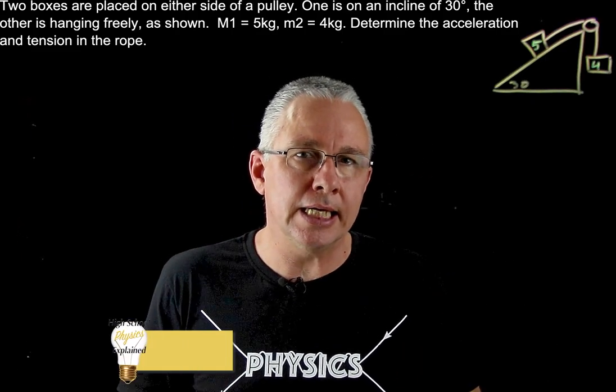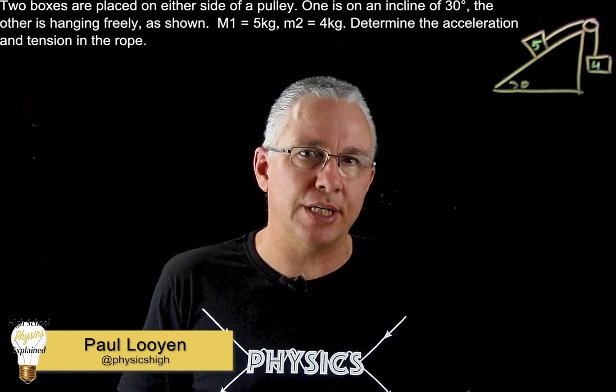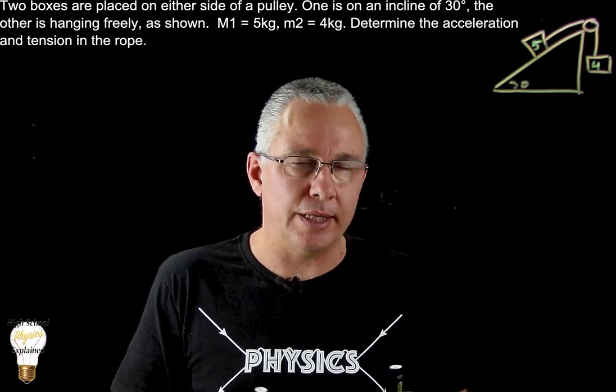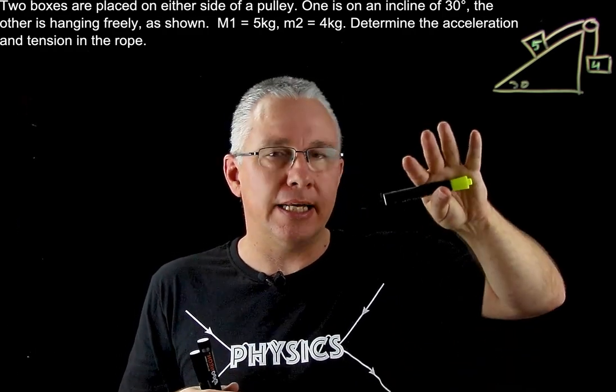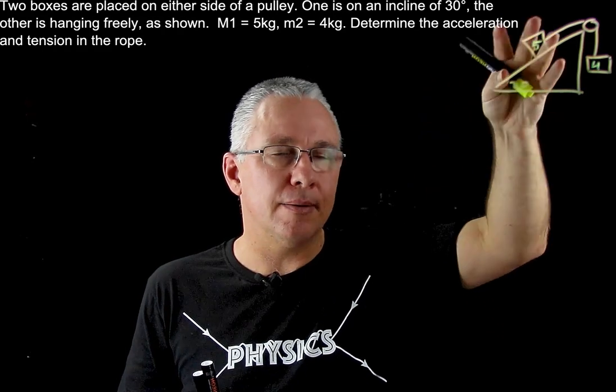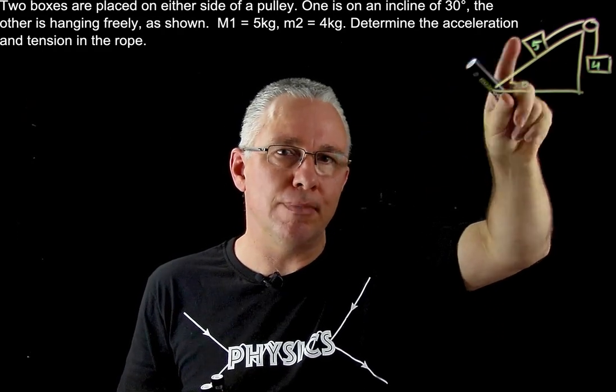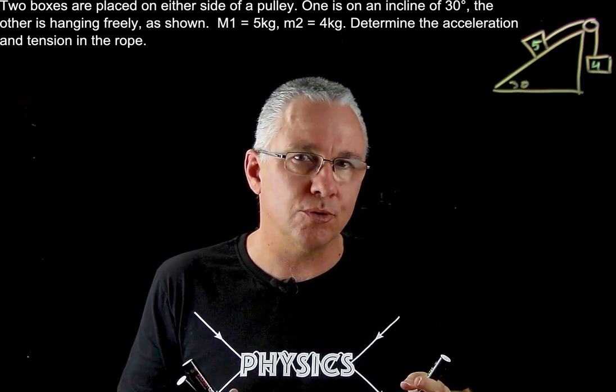So here we have a classic incline problem or Atwood's machine, or half Atwood machine if you want to call it that, where we have an incline and a pulley and these two masses are joined together by some sort of rope.